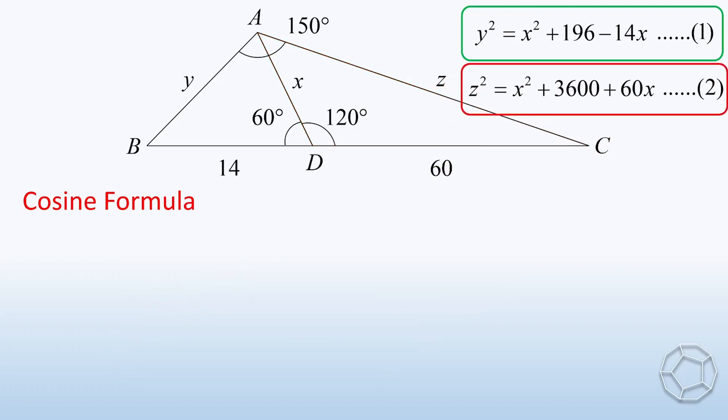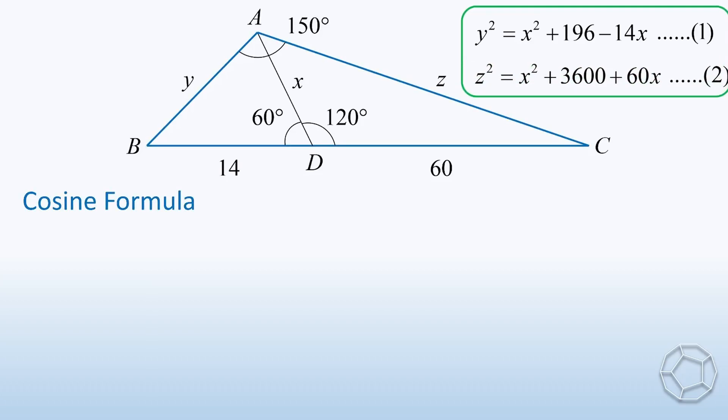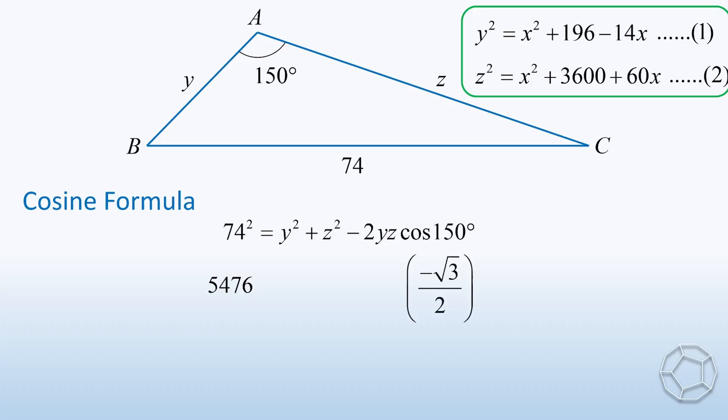So, we need one more equation. Where does it come from? Let's look at the largest blue triangle. We hide the side AD and the two angles for a moment. This time, we have 74 squared is equal to Y squared plus Z squared minus 2YZ cosine 150 degrees. The left-hand side is equal to 5,476. On the right-hand side, cosine 150 degrees is equal to negative square root 3 over 2. We keep the rest of the terms and do the cancellation. So, the right-hand side of our third equation is Y squared plus Z squared plus YZ times square root 3.